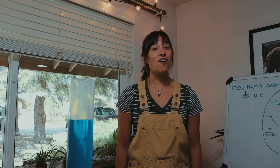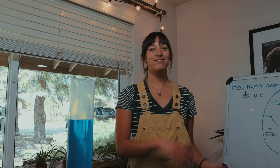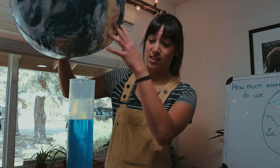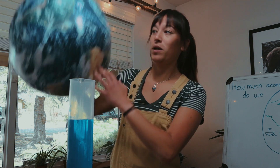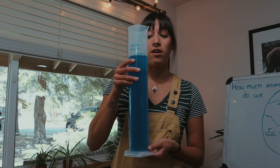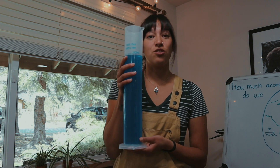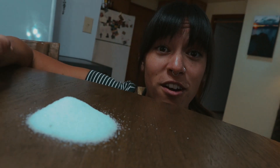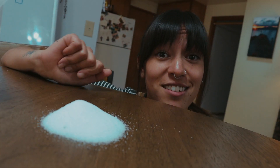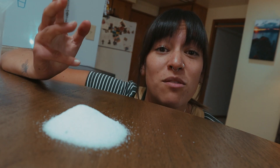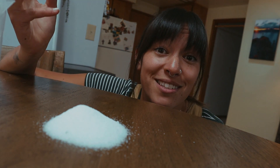Let's pretend I took all the Earth's water and dumped it into this graduated cylinder. This represents all of our Earth's water. But why do you think that we couldn't drink a lot of that water? If you thought salt water, you're correct.